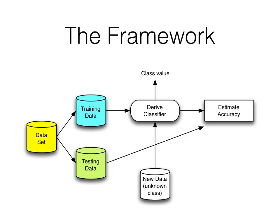Here's a schematic of the process. On the left we have our dataset, which we split into two subsets with no data points in common. We have a training set used to build the classifier, and a test set to estimate accuracy. Using the training set, we derive the classifier, then estimate accuracy using the test data, and then new data — where we don't know the class — is put through the classifier to give us the value.